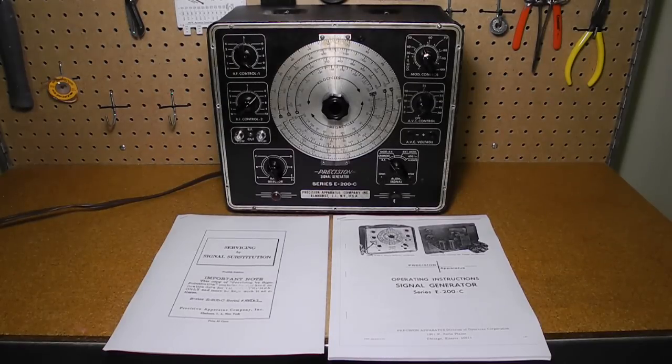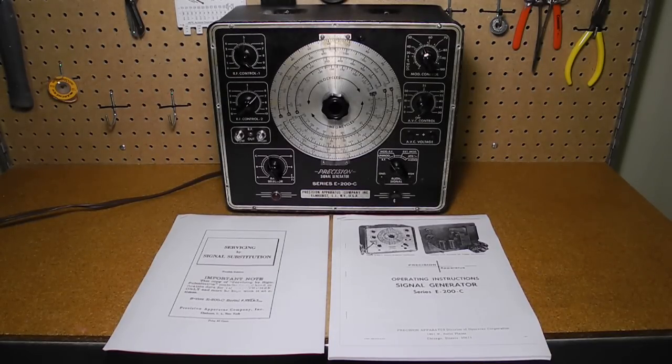The Precision Apparatus Company Inc. was founded in 1932 and was a manufacturer of test equipment and radio crystals. It was based at various times in Glendale, Elmhurst, and Brooklyn, New York. They also offered test equipment in kit form under the name PECO.